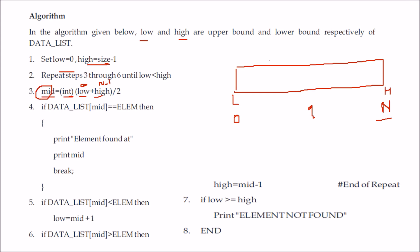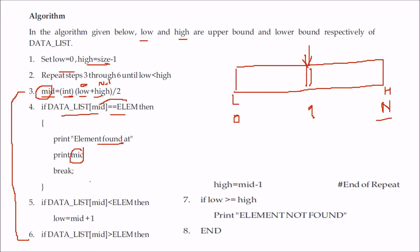Once you have the middle index, you search that element. If the element is found at the first go, you print element found, print the mid position, and break. Otherwise, three conditions may take place: you find it at mid, the element is less than mid, or the element is greater than mid.